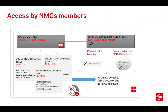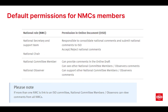Once that link is sent out, whether disseminated by the voter or through national e-balloting, the national experts can access and make their comments in the document. The default permissions for national mirror committee members: the national secretary, support team, and national chair will be responsible for consolidating national comments and submitting them to ISO, as well as accepting and rejecting national comments. National committee members and observers are able to provide comments.